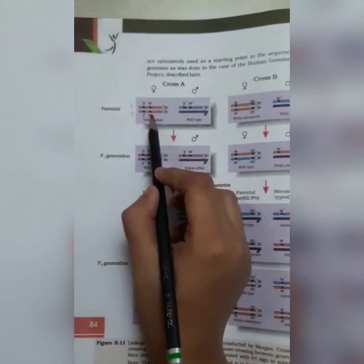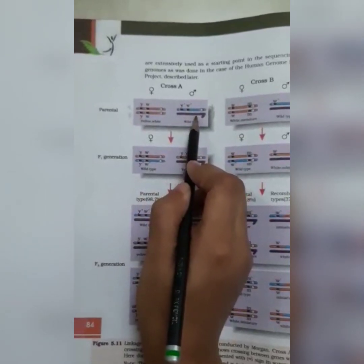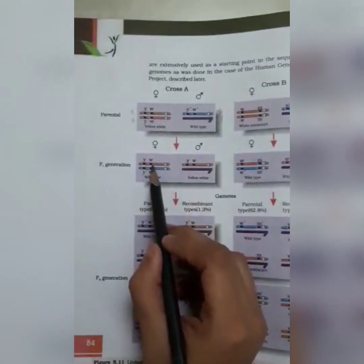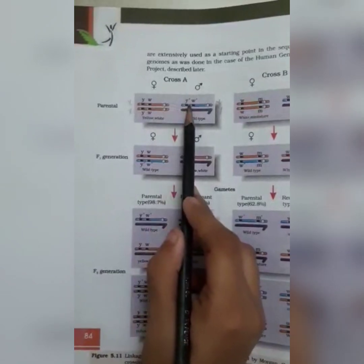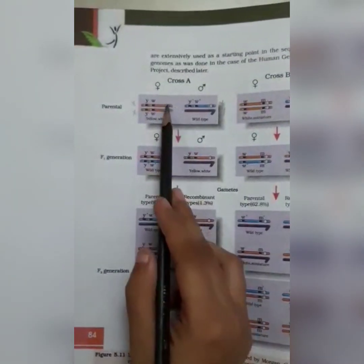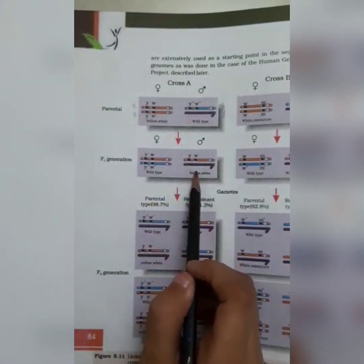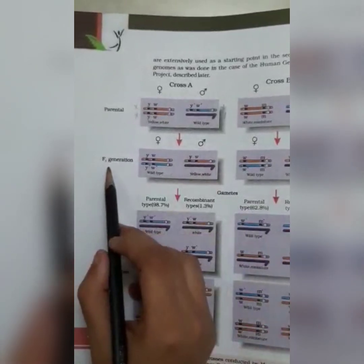We will take only one gamete and we will cross with X and Y chromosome of male. We will get this crossed with this one. We will get the wild-type, and when this is crossed with this purple one, we will get yellow body and white eye. This is the F1 generation.